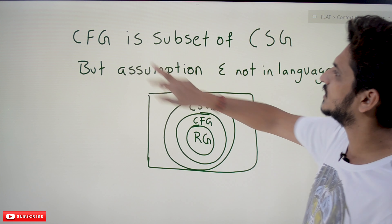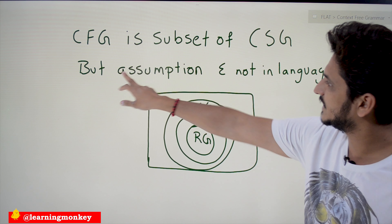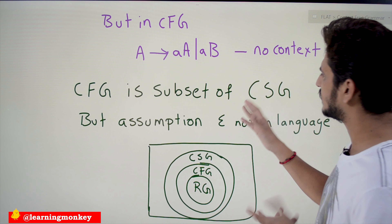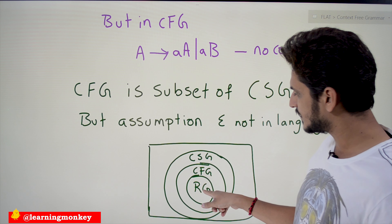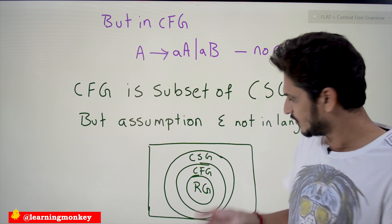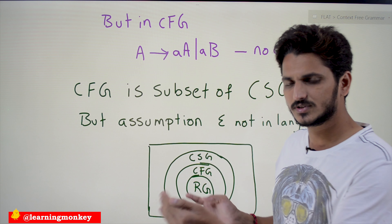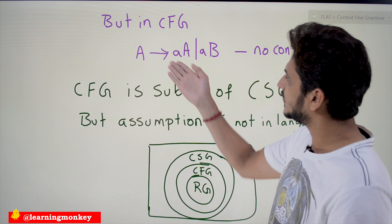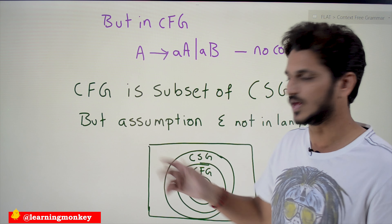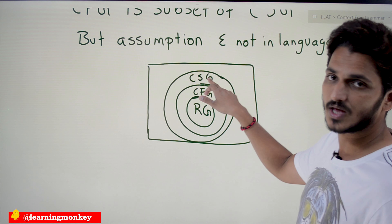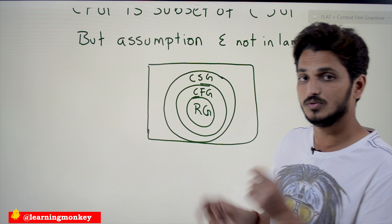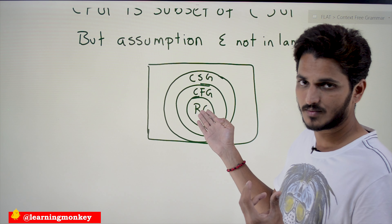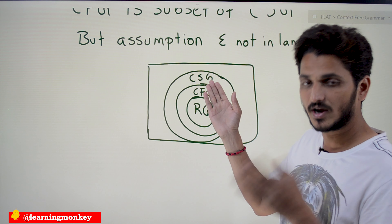Context free grammar is a subset of context sensitive grammar, with the assumption that epsilon is not in the language — only then does this condition satisfy. Regular grammar is a subset of one of the conditions of context free grammar, and similarly the conditions of context free grammar — where the left side has a single non-terminal and the right side can have anything — are one of the conditions of context sensitive grammar. That's why CFG is a subset of context sensitive grammar. Using context sensitive grammar, we can write grammar for languages that belong to CFG or regular grammar as well, and additionally some extra languages like a^n b^n c^n can be defined using context sensitive grammar.